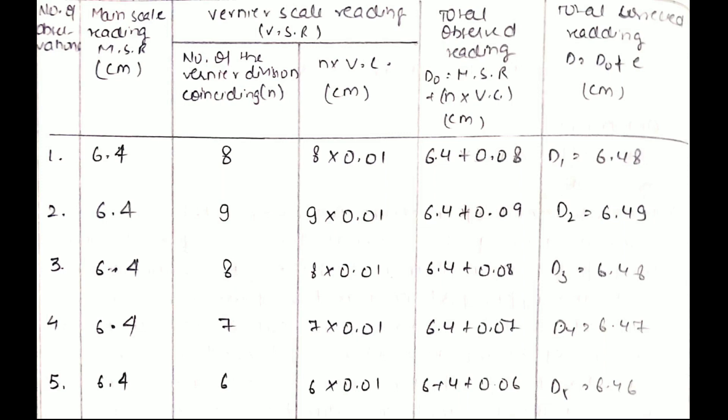After the calculation which I had mentioned in the previous video, you get the diameters. I took the reading five times so I got five diameters: d1 = 6.48 cm, d2 = 6.49 cm, d3 = 6.48 cm, d4 = 6.47 cm, and d5 = 6.46 cm. An important point to note is that there might be deviation, but a major deviation means you are going wrong in your calculation. After this there is a calculation of mean diameter.